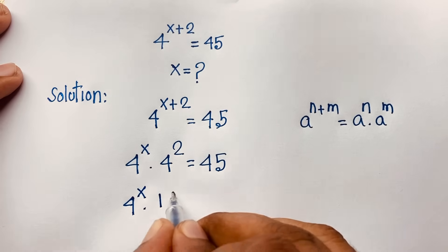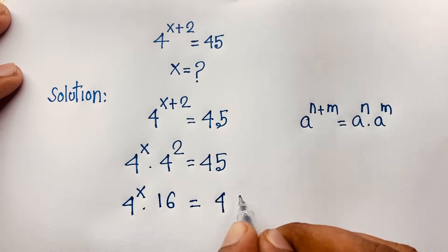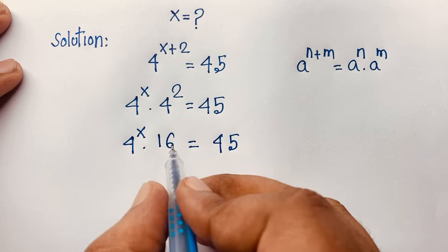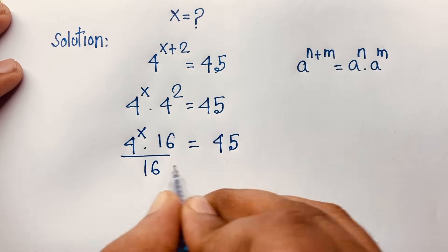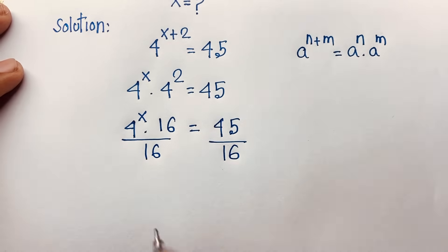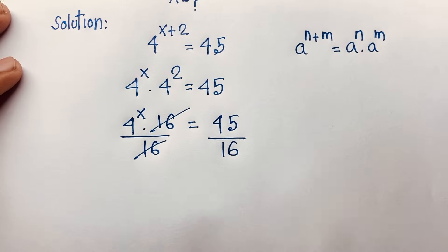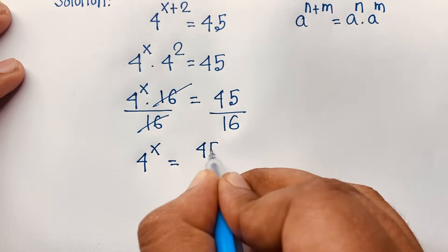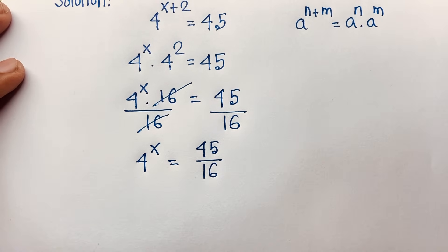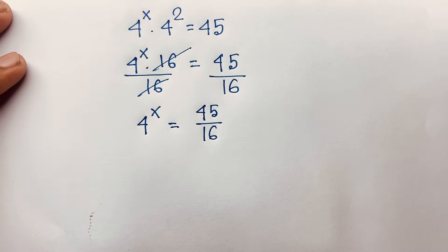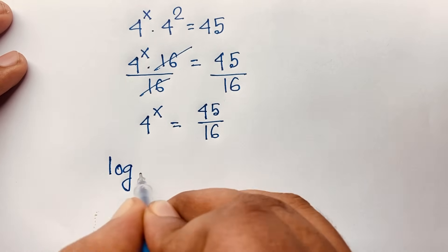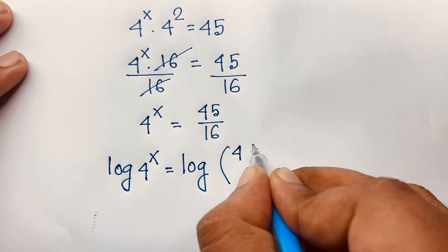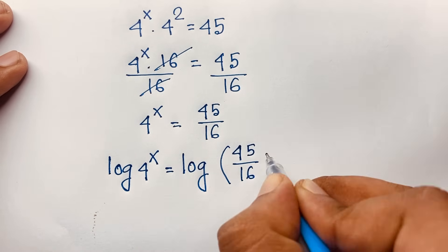Now 4 to the power 2 equals 16. I divide both sides by 16, so the 16s cancel out, and we find that 4 to the power x is equal to 45 over 16. Now I apply log to both sides: log of 4 to the power x equals log of 45 over 16.